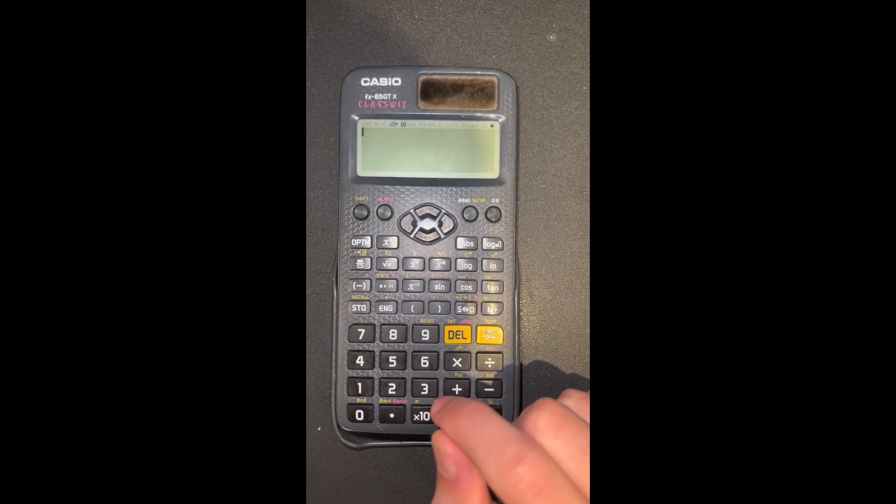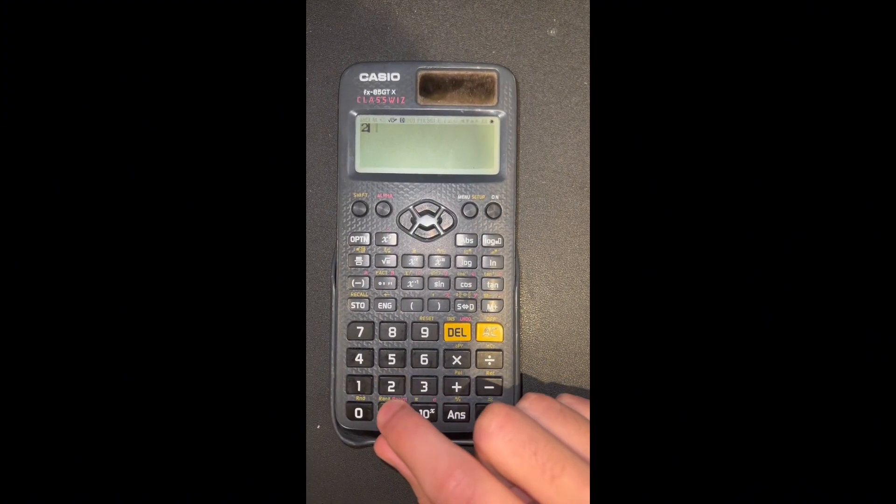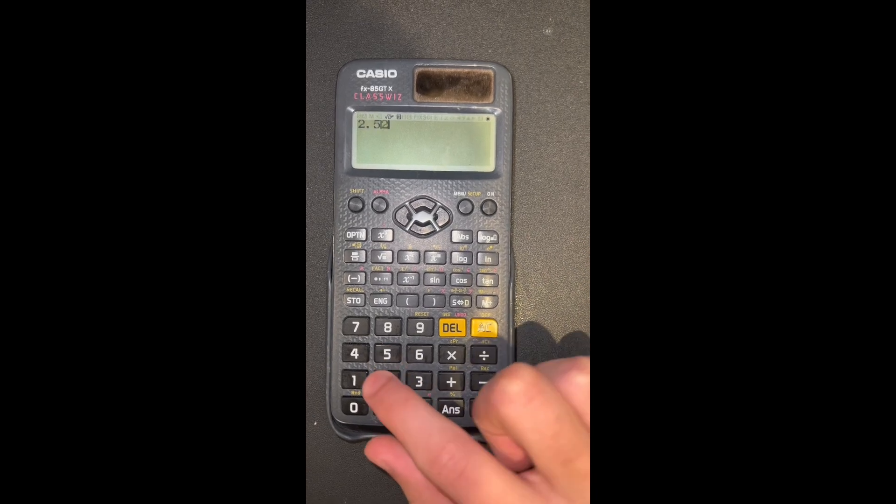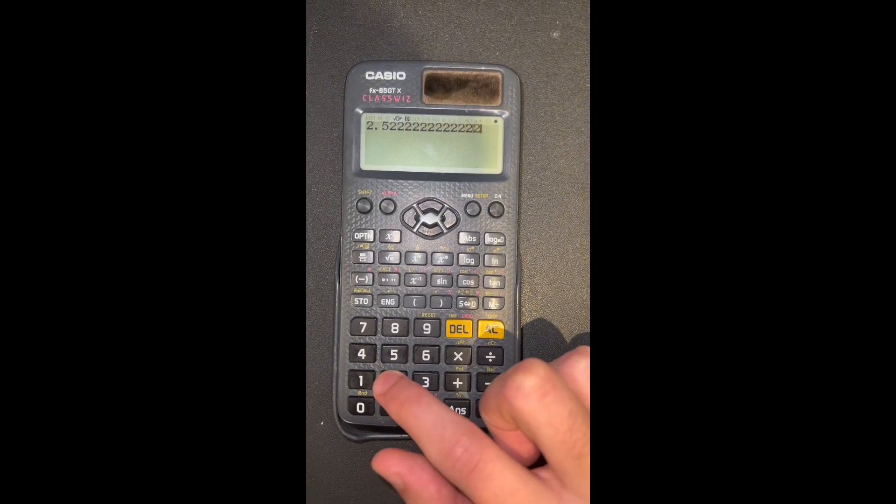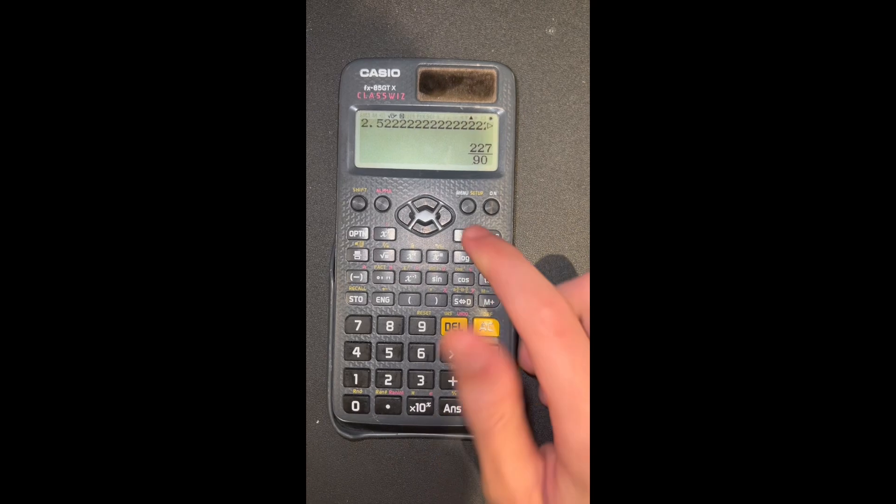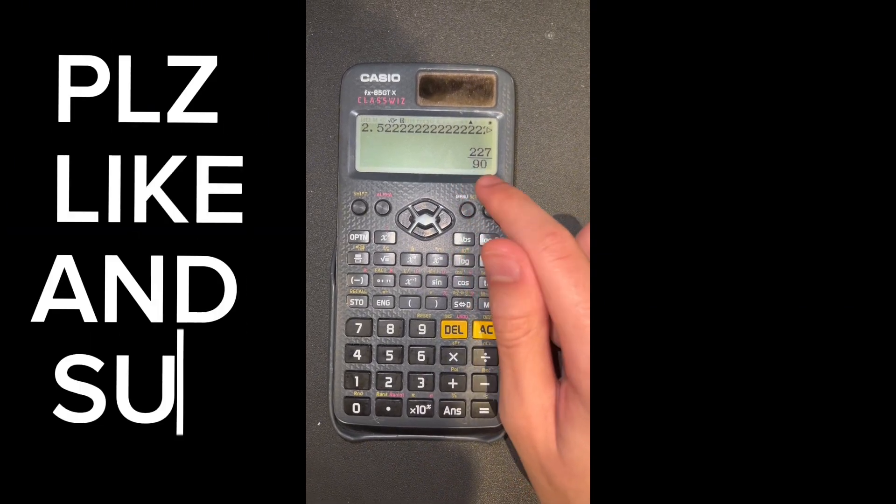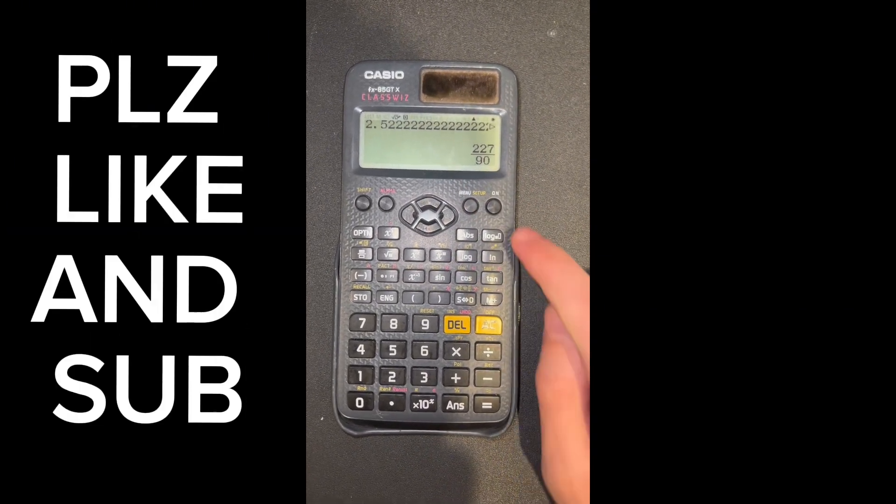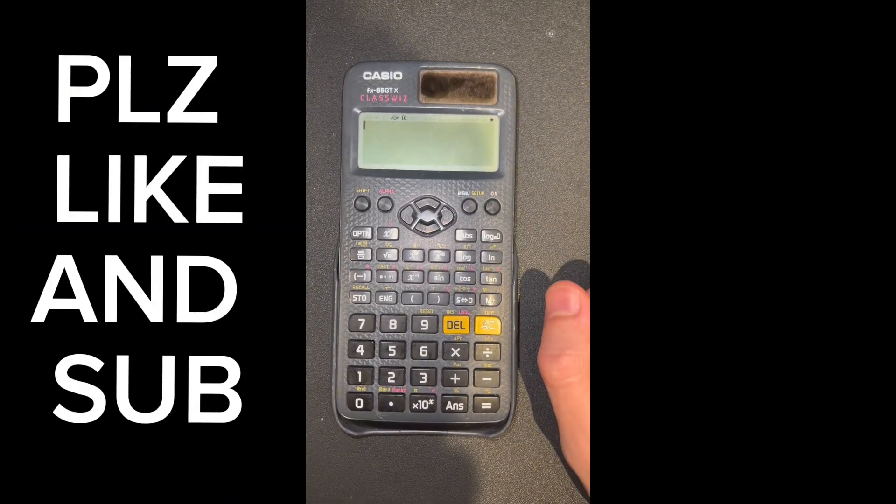Now not all calculators have this recurring decimal button. So if you don't have it on your calculator, then all you need to do is just spam a bunch of times the number you want to be recurred, and as you press equal, it'll still give you the same answer. Anyway, I hope you found this video helpful, and thank you for watching.